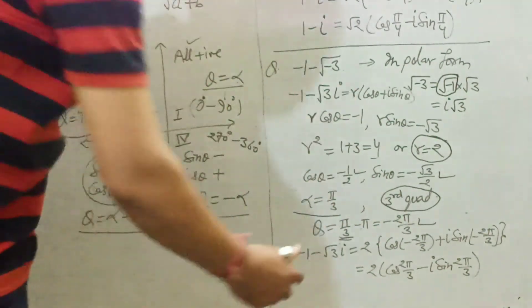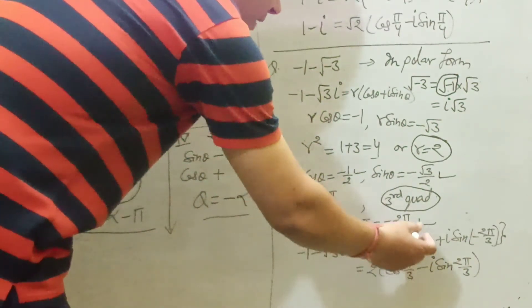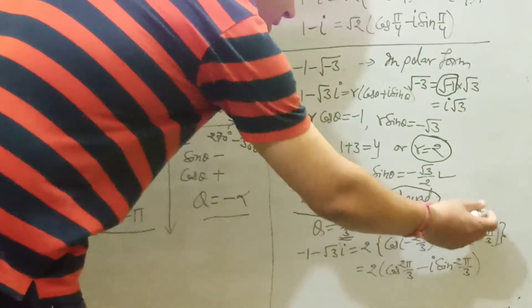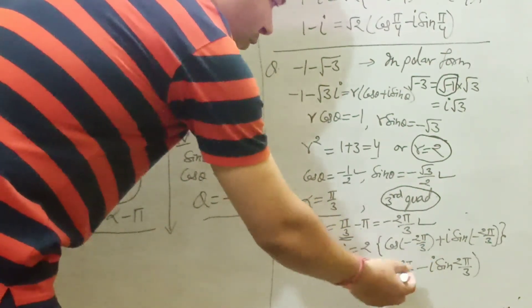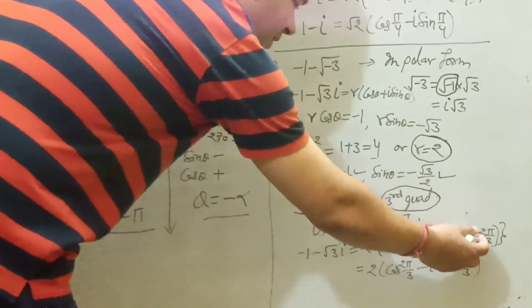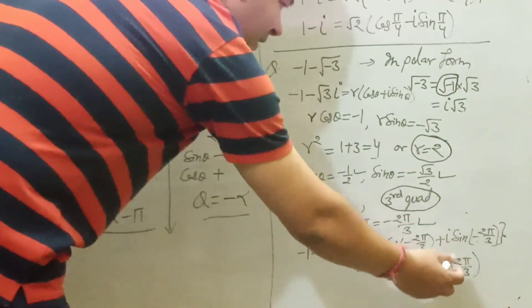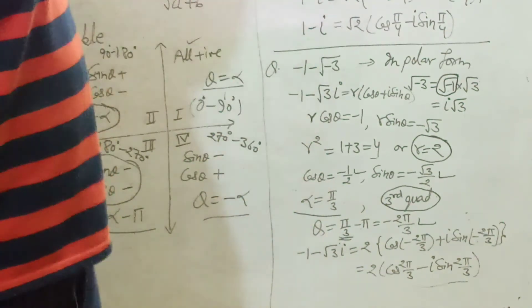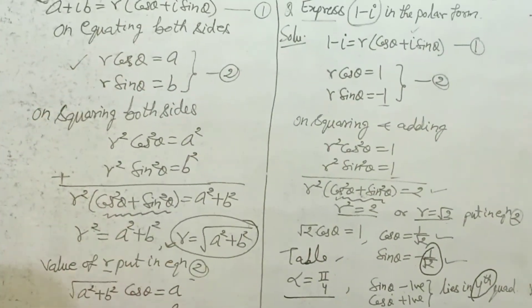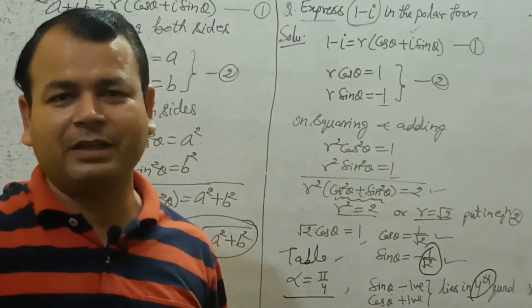Now R equals 2 and theta equals minus 2 pi by 3. Put these in the standard form: minus 1 minus root 3 equals 2 times (cos(−2π/3) + i sin(−2π/3)). Since cos(−θ) = cos θ, we get cos(2π/3). And since sin(−θ) = −sin θ, this becomes minus i sin(2π/3). So the polar form is 2 times (cos 2π/3 minus i sin 2π/3). Follow the same process for any polar form problem, paying attention to the quadrant when calculating theta. Thank you.